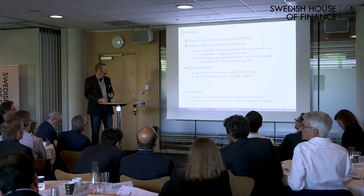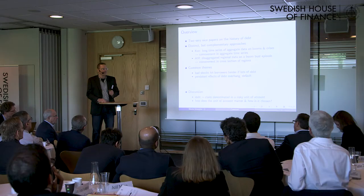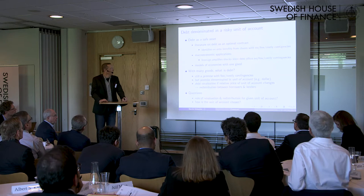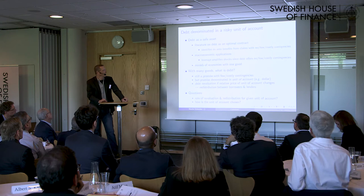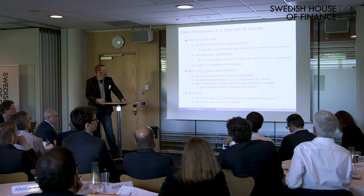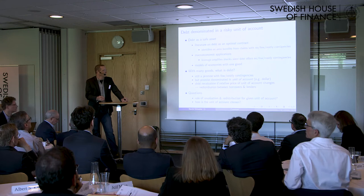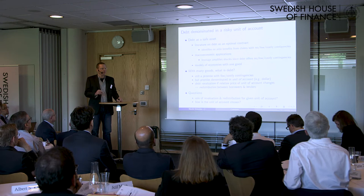What I want to do in this discussion is expand on points that came up in both presentations: debt is a claim denominated in a unit of account, and that unit of account is risky. I want to ask how does a unit of account matter and how is it chosen? We usually think of debt as a safe asset. There's a large literature on debt as an optimal contract identifying benefits from claims with few or costly contingencies, and in macro applications, leverage amplifies shocks because debt has few contingencies. This all works in models with one good, where safety is about the payoff profile in that one good. But in a world with many goods, what is debt?